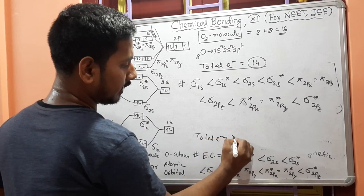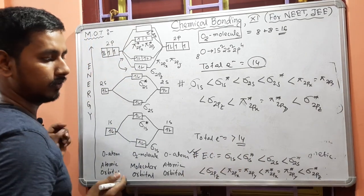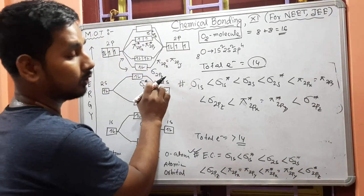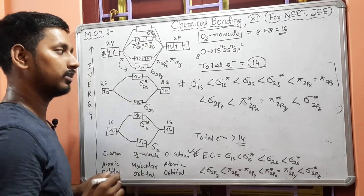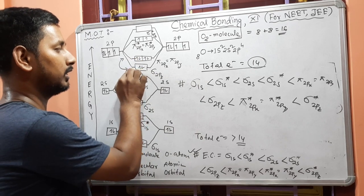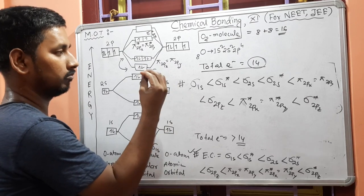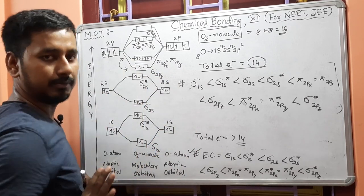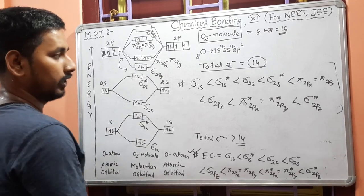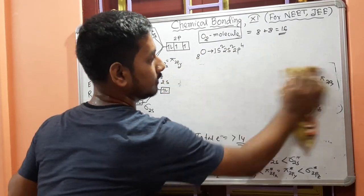If the total number of electrons is greater than 14, then the order is: after σ2s*, write σ2pz first, then π2px = π2py. For ≤14, interchange those two — π2px = π2py comes before σ2pz. For >14, the order remains: σ2pz, then π2px = π2py. Just remember these two rules for Molecular Orbital Theory.